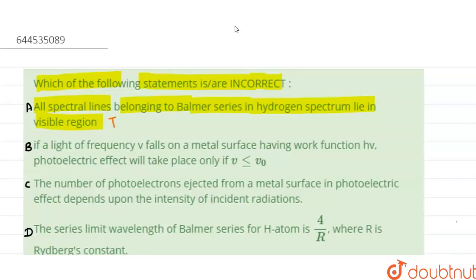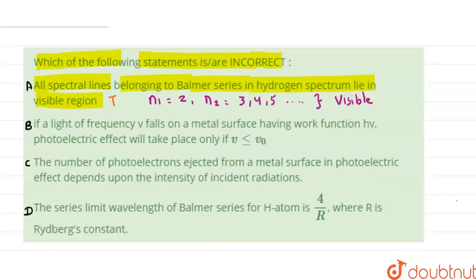all the lines that correspond to the Balmer series—that means n₁ = 2 and n₂ = 3, 4, 5, and so on—they all belong to the Balmer series and lie in the visible region. So statement A is true and is not the required answer.